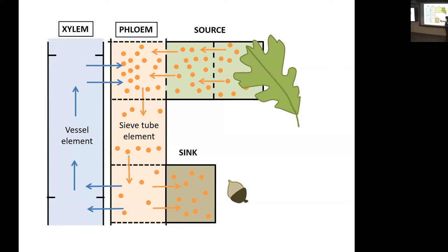Other parts of the plant — anywhere with active growth such as roots, fruit, or an apical meristem — have a similar but opposite phenomenon happening. The plant is removing sugar from the system, pulling it out and reducing the pressure. So the plant creates a pressure gradient that drives circulation from the source to the sink. This is the way we think transport happens in the phloem.